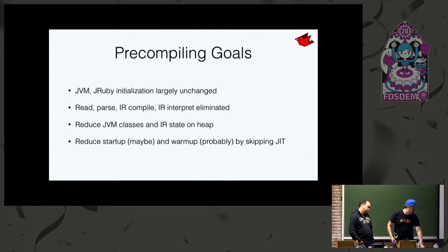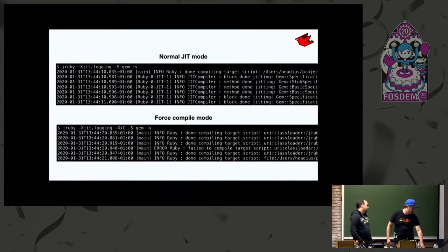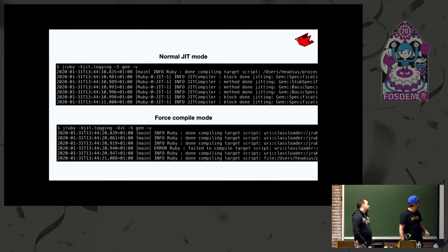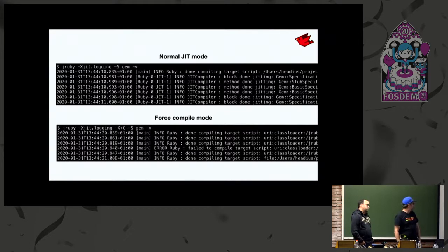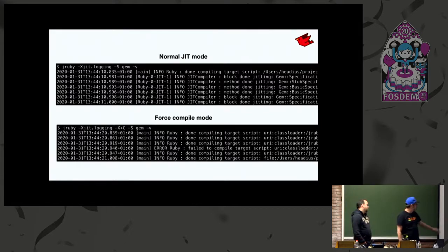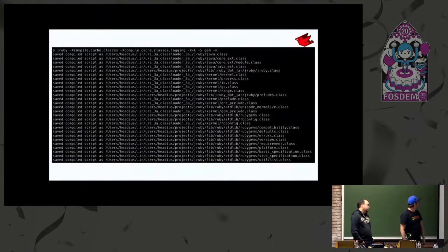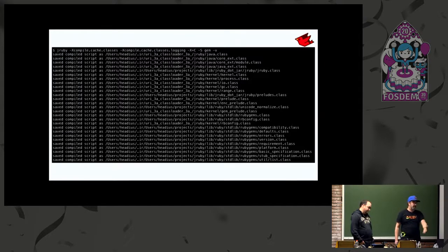Unfortunately it hasn't worked out as well as we expected. In normal JIT mode, only the main target script compiles ahead of time; everything else compiles at runtime once hit enough. Changing the flag to -Xplusc forces every script to compile completely before executing. Combining this with the new AOT mode — compile cache, classes at the top — we get a whole list of scripts being pre-compiled into a cache directory, which can be loaded directly from class files next time.